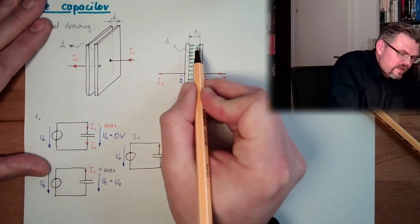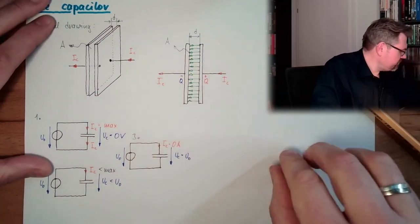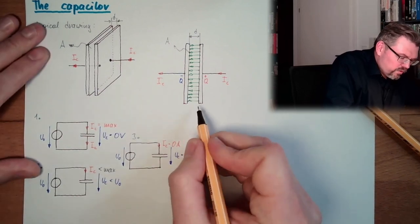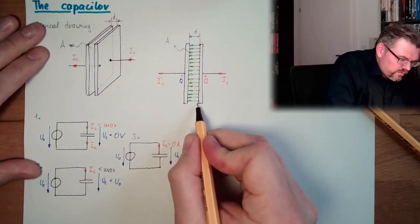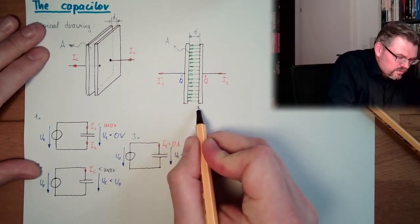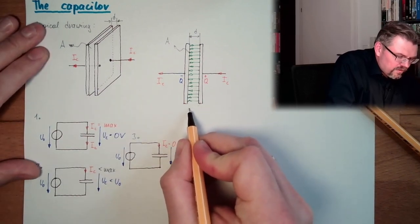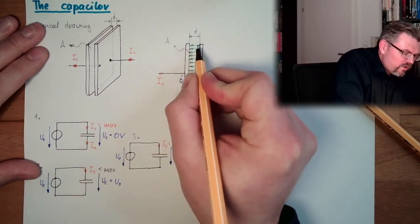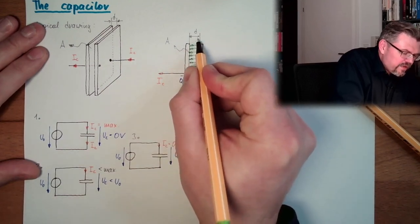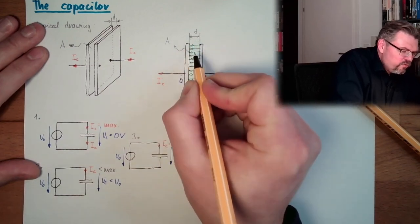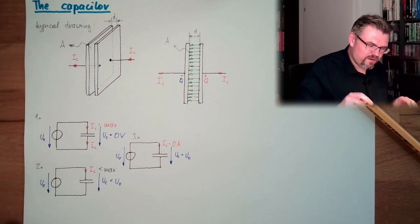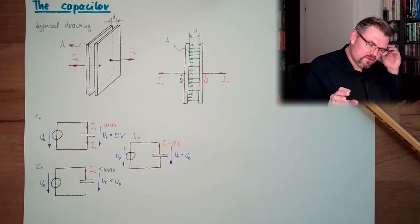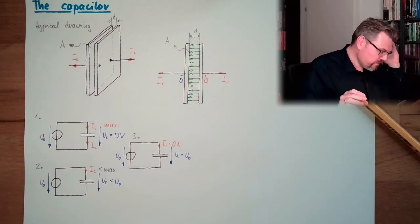Here at the sides we have small disturbances, so field lines go out something like that. We have disturbances at the edge, but they are usually very small and we will neglect them.